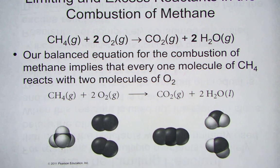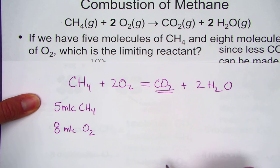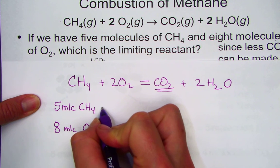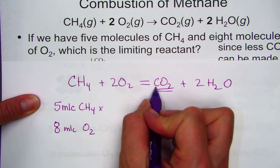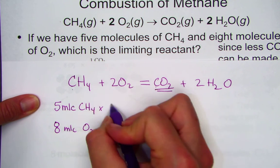For reactions with multiple reactants, it's likely that one of the reactants will be used up completely before the others. And when that reactant is used up, the reaction stops and no more product can be made. That reactant that limits the amount of product is known as the limiting reagent.